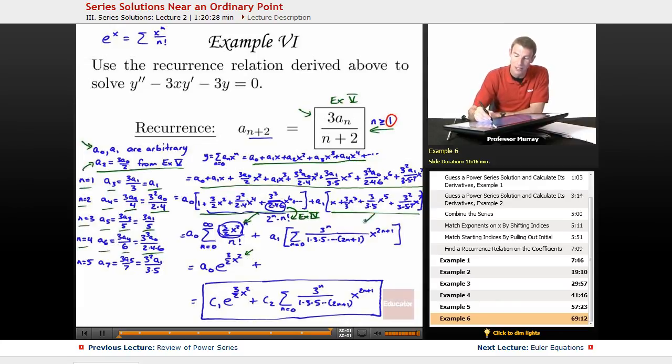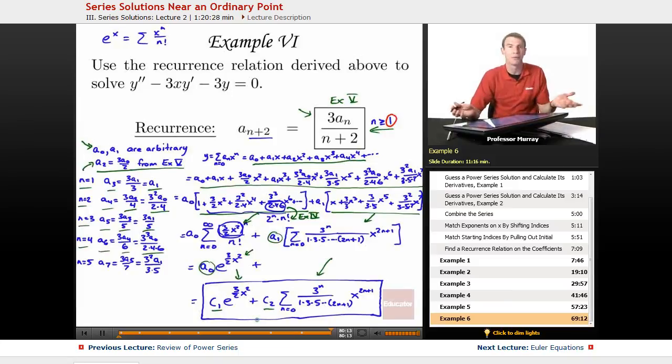The series on the right didn't really turn into anything good. We just had to leave it as a series. And so we got these two independent solutions. And as usual, I converted the A0 and A1 into a C1 and C2. That's not really a very necessary step. You can leave it as A0 and A1 if you want.